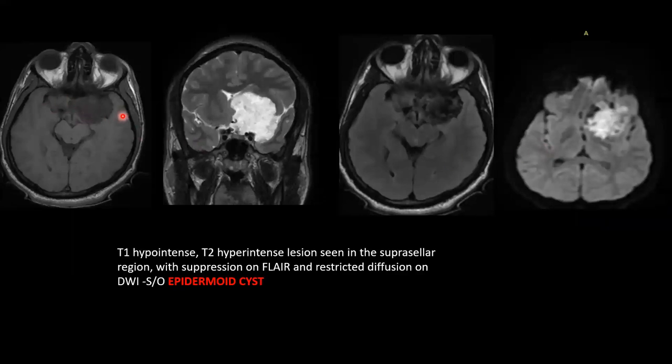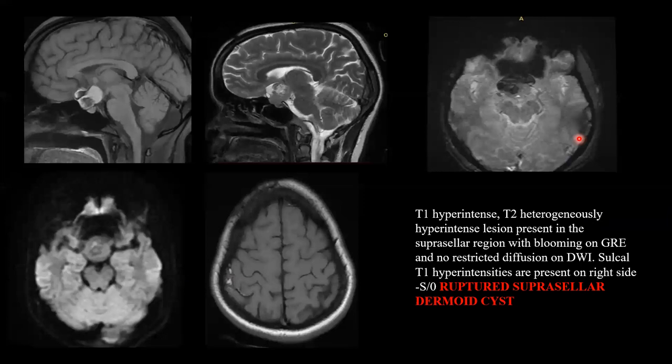T1 hypointense, T2 hyperintense lesion suppressing on FLAIR with restricted diffusion on DWI. This is a case of epidermoid cyst.